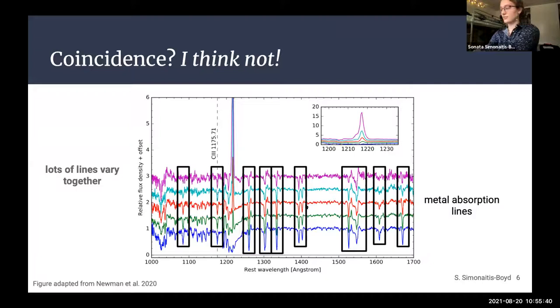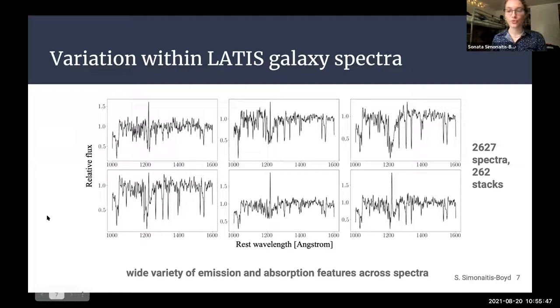So now that we've gotten that out of the way, on to the project itself. So what we did to start is we took our 2,627 LATIS galaxy spectra and we grouped them in tens according to their similarity as judged by chi-squared metric. This leaves us with 262 stacks or average spectra. What I have here plotted is six random stacks from our 262. We just wanted to do a qualitative analysis just to get an idea of how much work we have cut out for us.